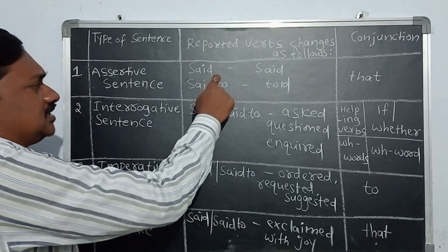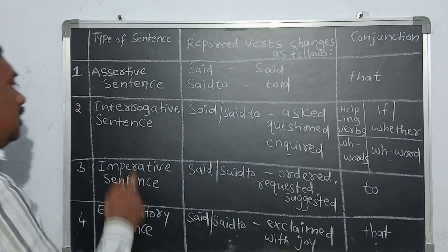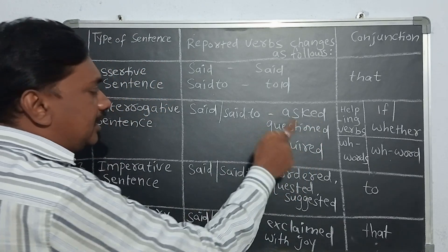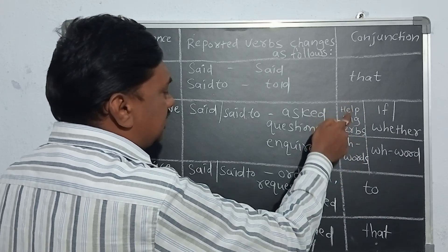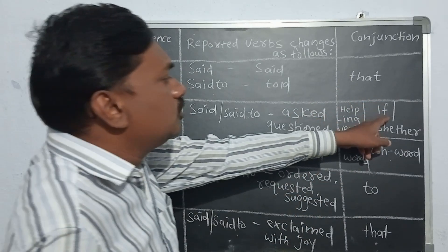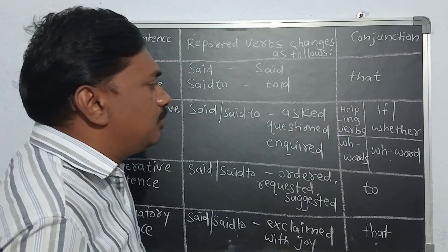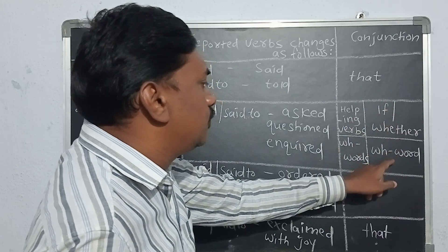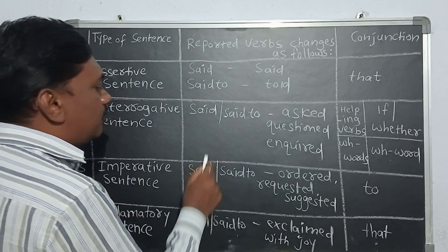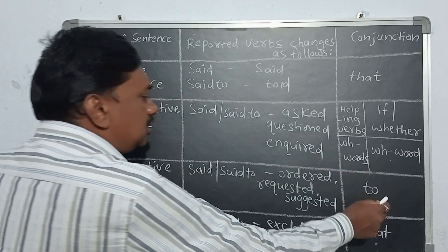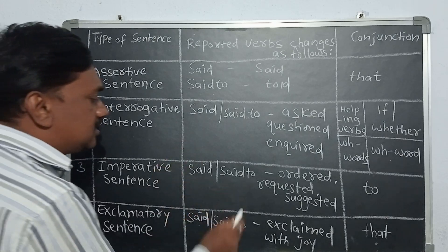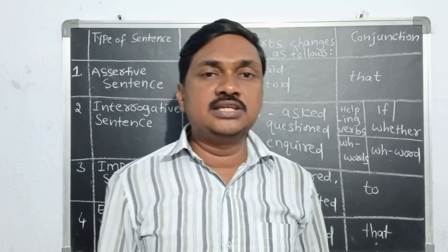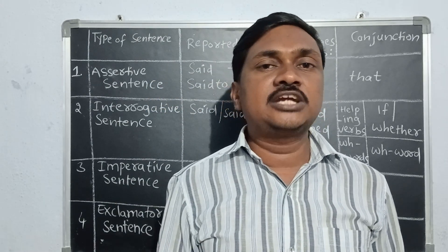To summarize: for assertive sentences, 'said' remains 'said' and 'said to' becomes 'told', using conjunction 'that'. For interrogative sentences, 'said' or 'said to' becomes 'asked', 'questioned', or 'inquired' — conjunction 'if' or 'whether' for helping-verb questions, and the WH-word itself as conjunction for WH-questions. For imperative sentences, the reported verb becomes 'ordered', 'requested', or 'suggested', with conjunction 'to'. For exclamatory sentences, it becomes 'exclaimed with joy' or 'exclaimed sadly'. In the next class we will discuss examples for changing direct speech into indirect speech.